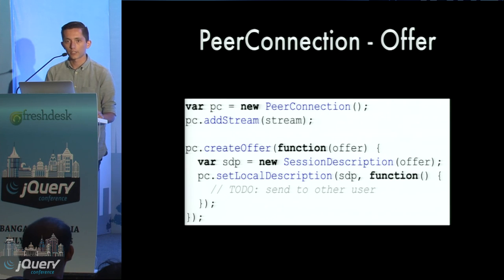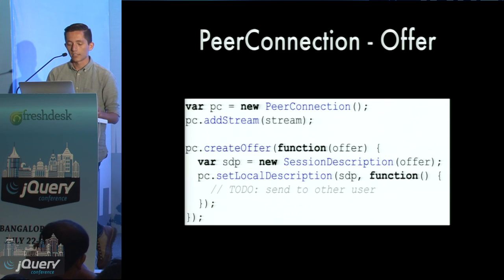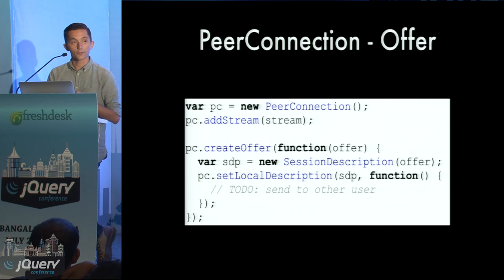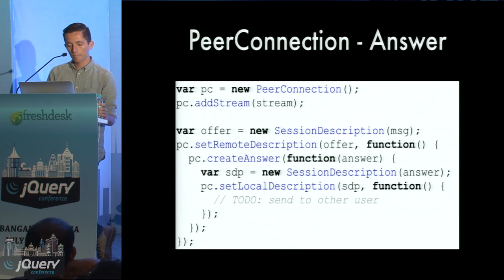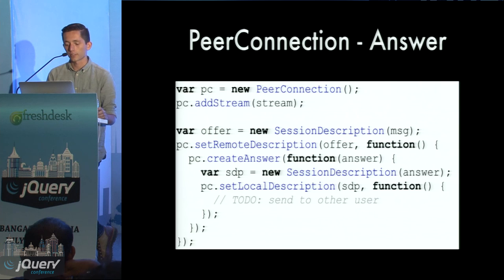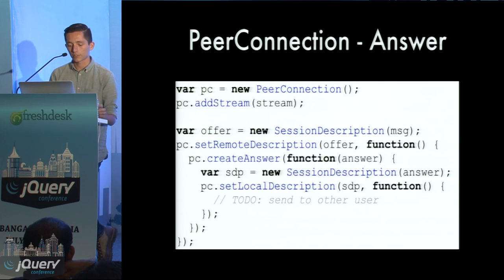There's a bit of a song and dance involved when getting two people talking. One person starts by creating an offer — you create a PeerConnection instance, create an offer, then send it to the other person somehow. The offer message contains information that tells the other person how to talk directly with this user. When the other person receives the offer, they create a new PeerConnection, set their camera stream on it, then create an answer response. Once the offer and answer messages are exchanged via a signaling server, both parties have sufficient information to connect directly.